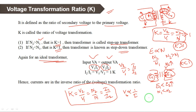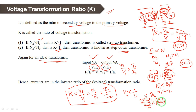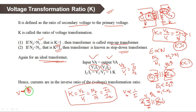If voltage increases from primary to secondary, then current automatically decreases from primary to secondary. Voltage is inversely proportional to current — if voltage increases, current decreases, so power remains balanced from primary to secondary. This is the concept of transformation ratio, and it is a very important concept for solving transformer problems.